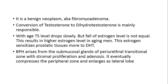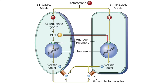BPH arises from the sub-mucosal glands of the periurethral transition zone with stromal proliferation and adenosis. It eventually compresses the peripheral zone and enlarges the lateral lobe. Here we have shown the stromal cells and the epithelial cells of the prostate gland. In the stromal cells we have the special enzyme called 5-alpha reductase type 2. Testosterone is converted by this enzyme to dihydrotestosterone, which acts on the androgen receptors of both stromal and epithelial cells, leading to formation of growth factors — fibroblast growth factors (FGF) or transforming growth factors (TGF) — acting in autocrine or paracrine fashion. These growth factors are mitogenic to both stromal and epithelial cells, responsible for hyperplasia of the prostate gland.